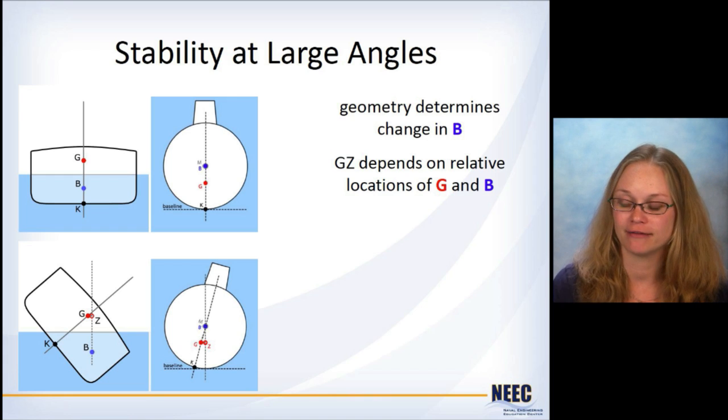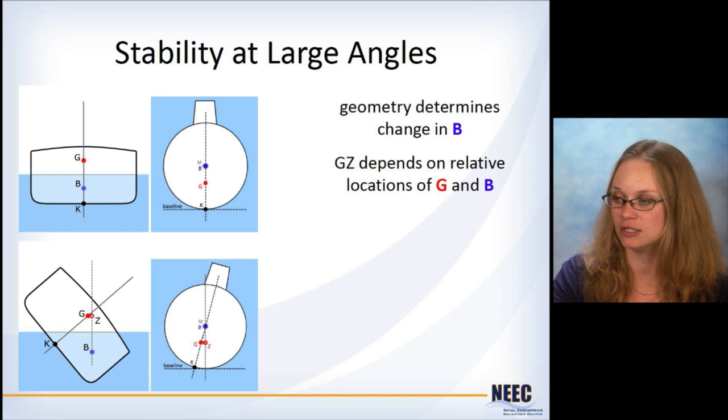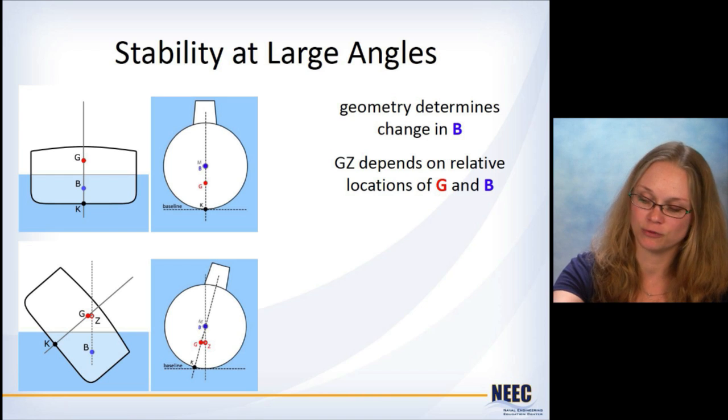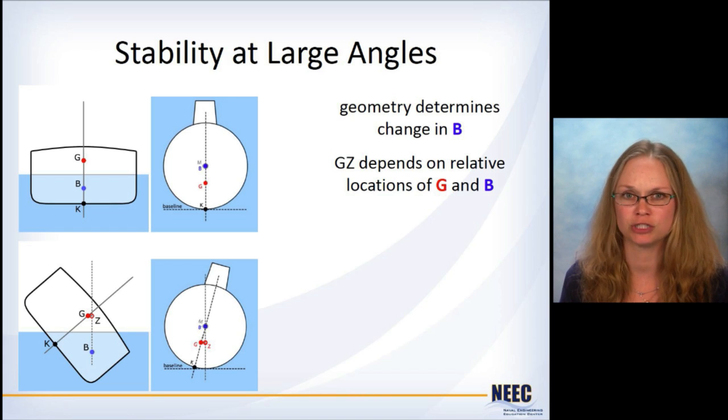For stability at large angles, there's something very unique that happens with the submarines. So the geometry really determines the change in the center of buoyancy. We've got the ship on the left-hand side and the submarine at depth on the right-hand side. As the ship heels over, the center of buoyancy really changes quite a bit because the underwater geometry of the ship is changing so radically. But for the submarine, the whole thing is underwater already. And so the center of buoyancy doesn't change. It's in the same spot.